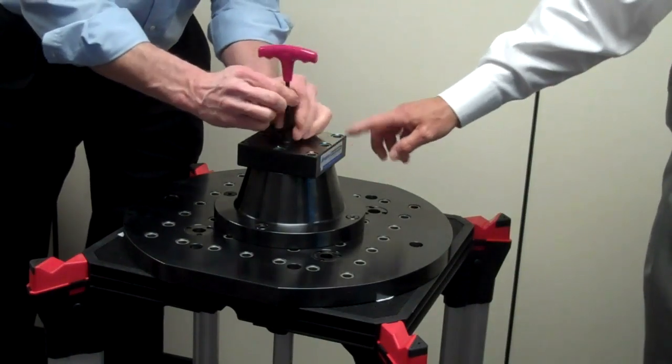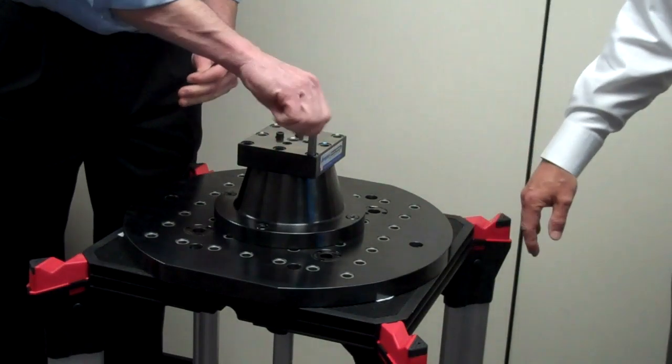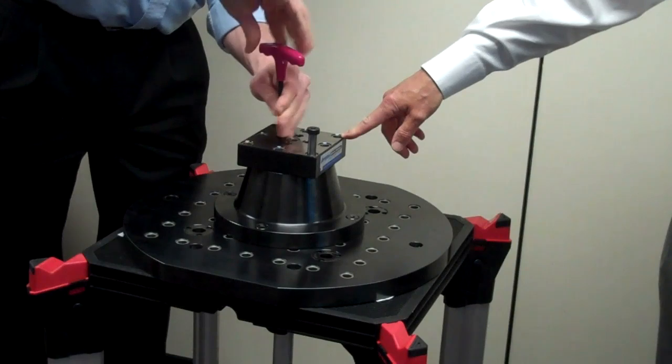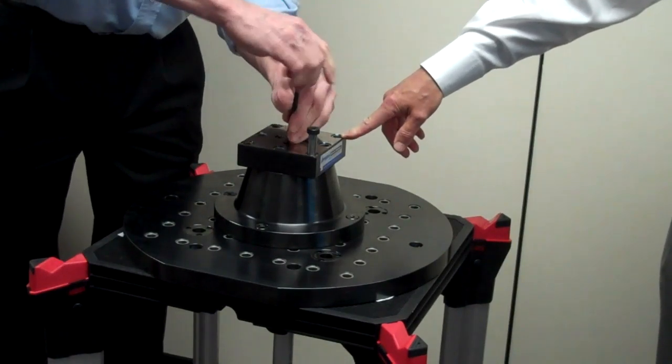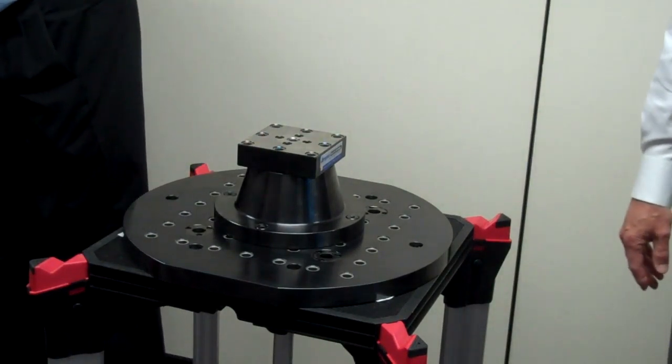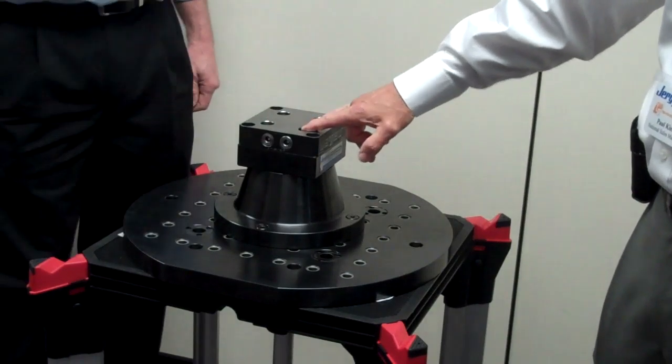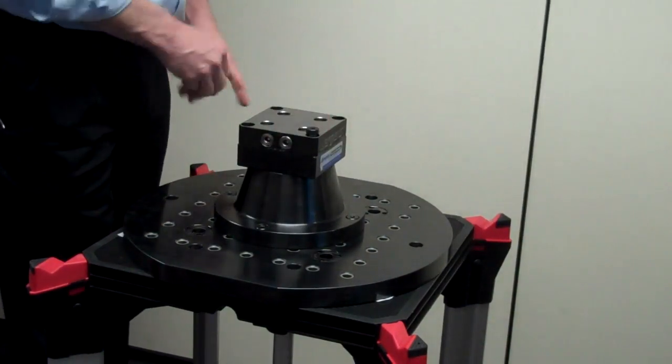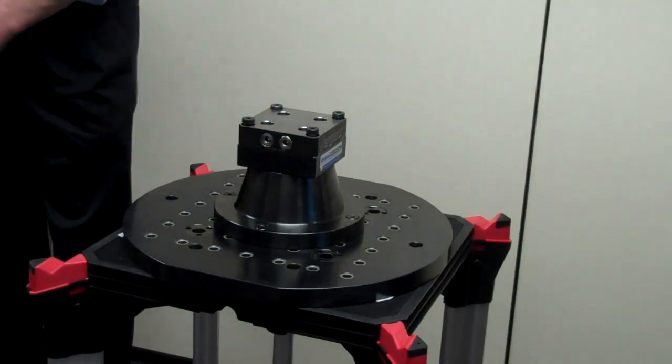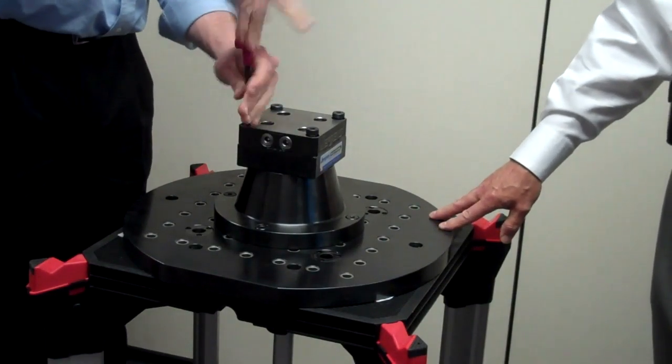A fixture or vice could be mounted directly to the pallet. But what we're going to do here is mount a Fixture Pro Quick Change Pallet Changer to this pallet. The pallet changer incorporates a quick change system, which will allow you to rapidly exchange work, and then we're going to add more vices or fixtures to the top of the riser.